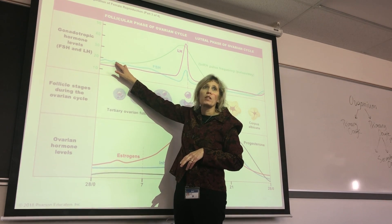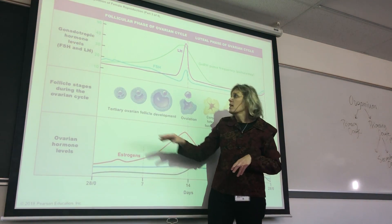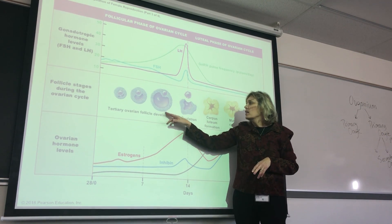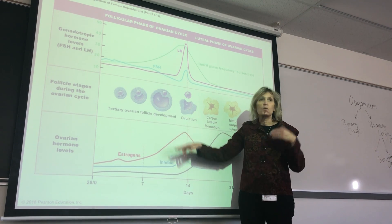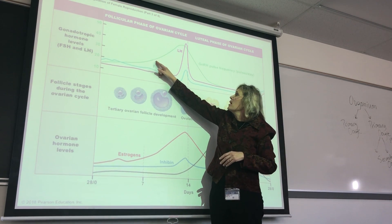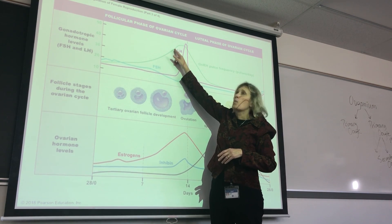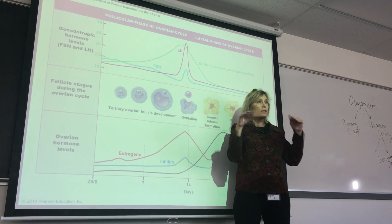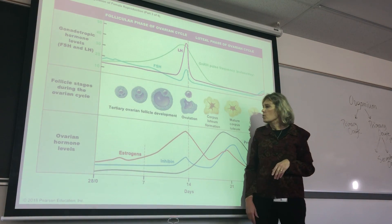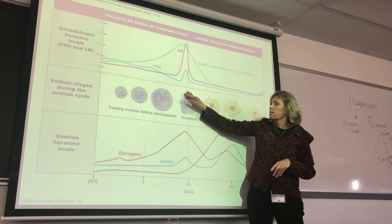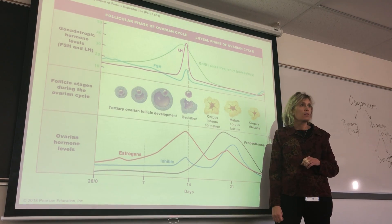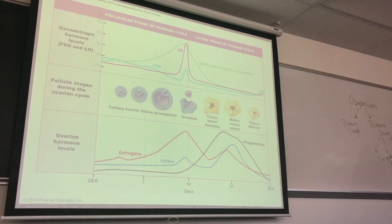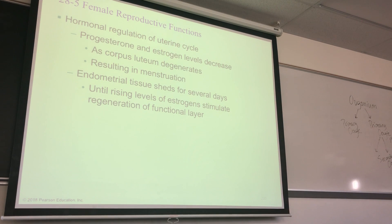Estrogens are at a low level, so gonadotropic releasing hormone pulsing is low. The follicles start to develop. We get to the secondary follicle and those follicles start to produce estrogens. The estrogen level makes the gonadotropic releasing hormone start to pulse faster. By the time we get to ovulation, gonadotropic releasing hormone is pulsing as fast as it's going to. That causes the release of luteinizing hormone, which causes ovulation. It just keeps going over and over again. Make sure you study that and think through what's causing what to be released.